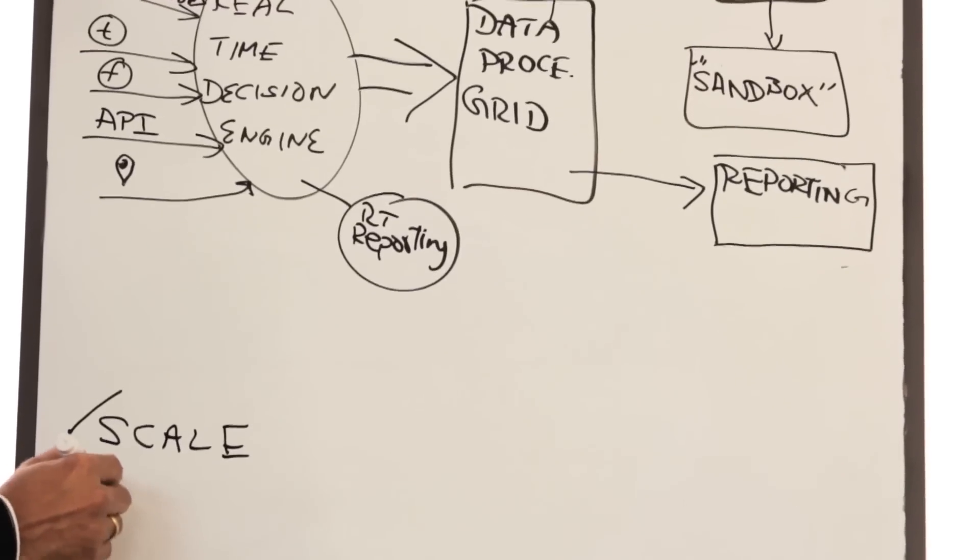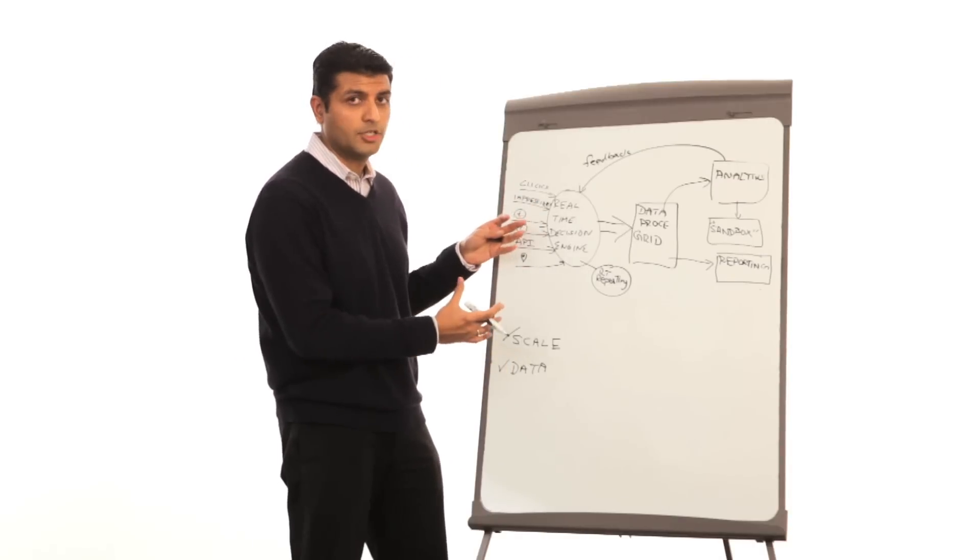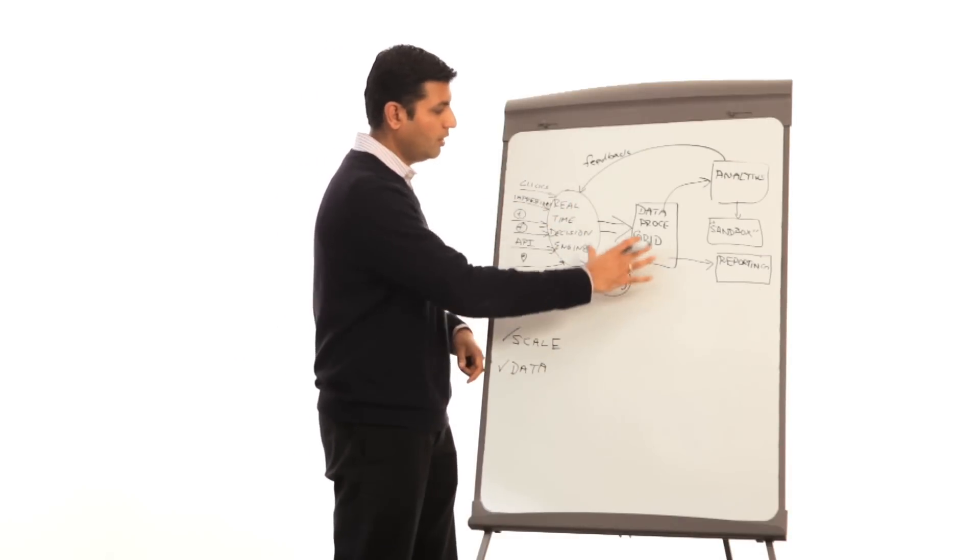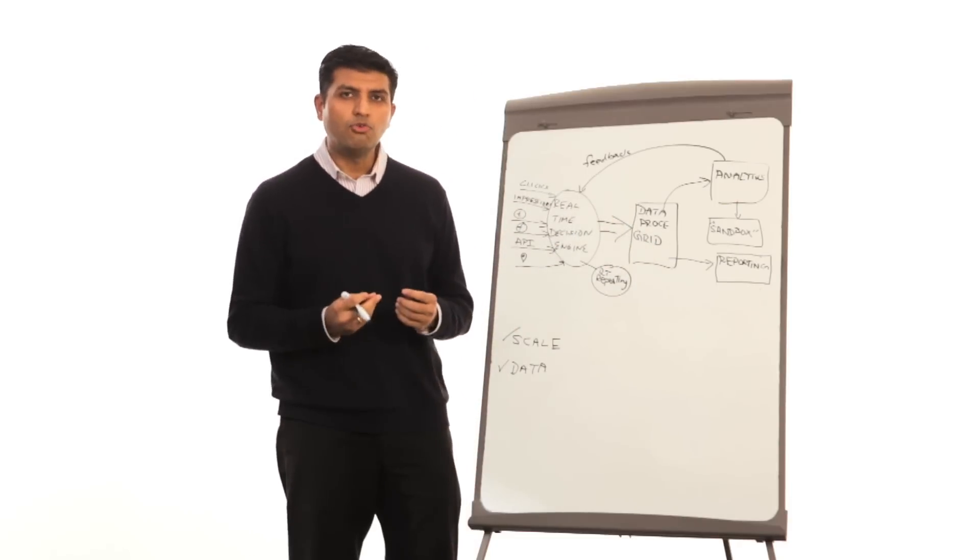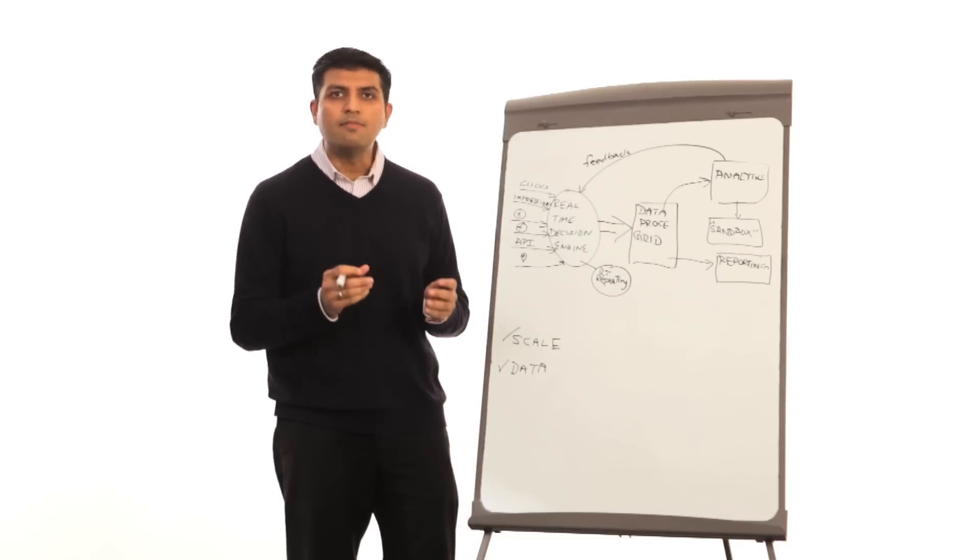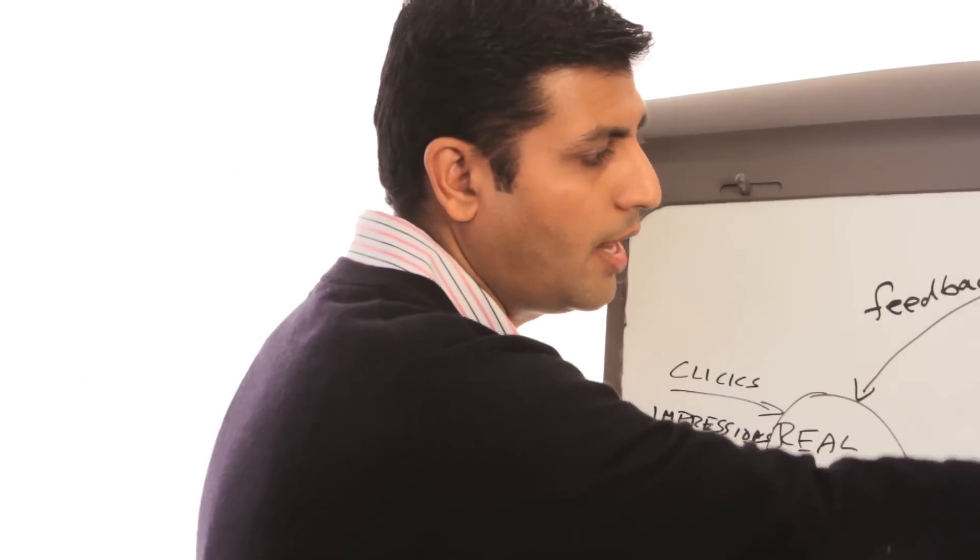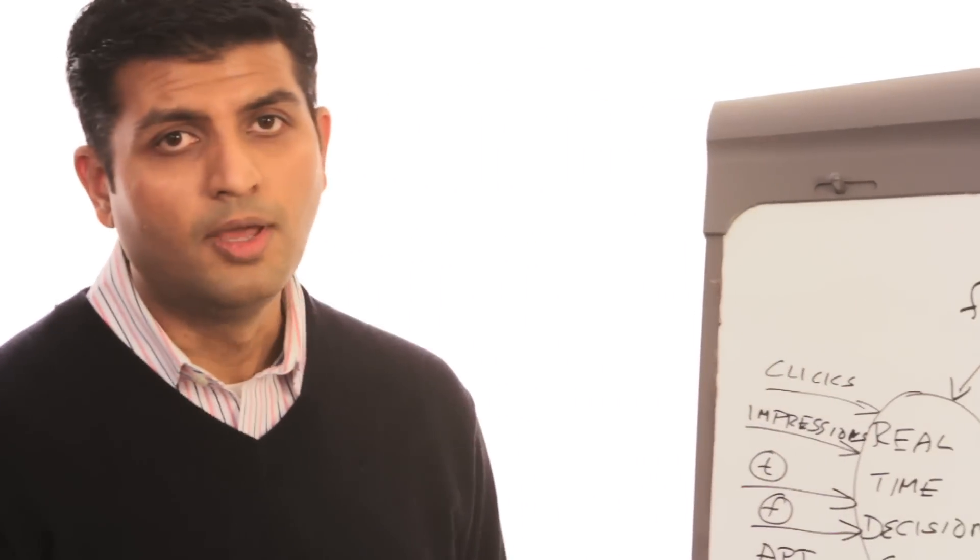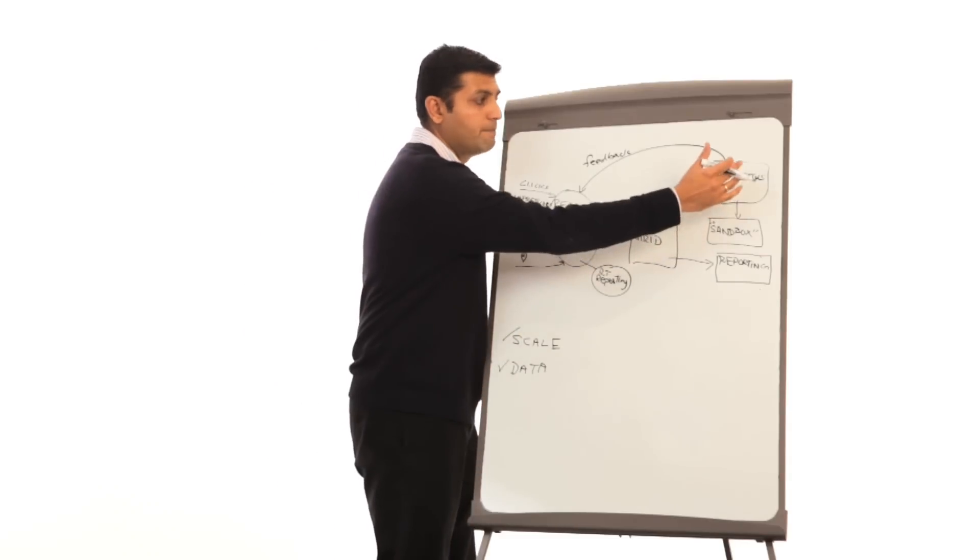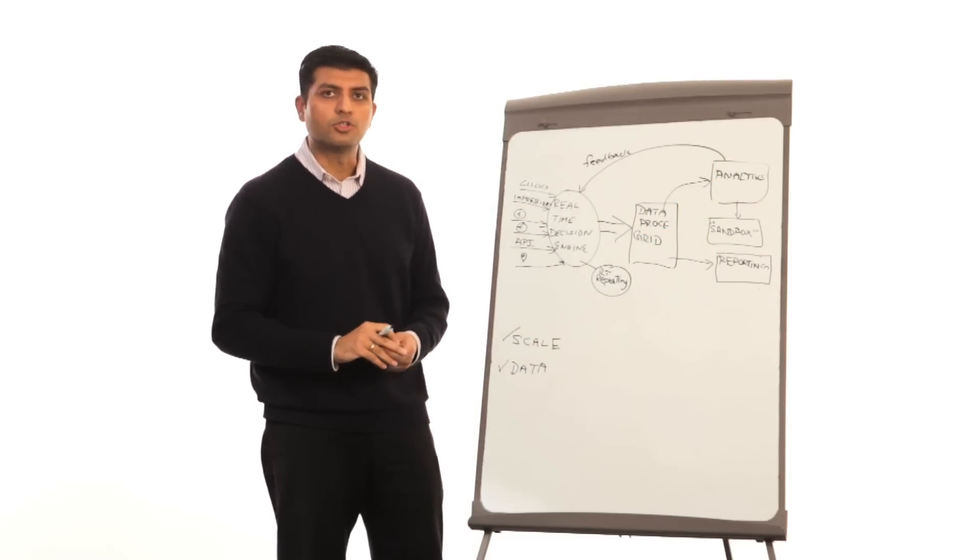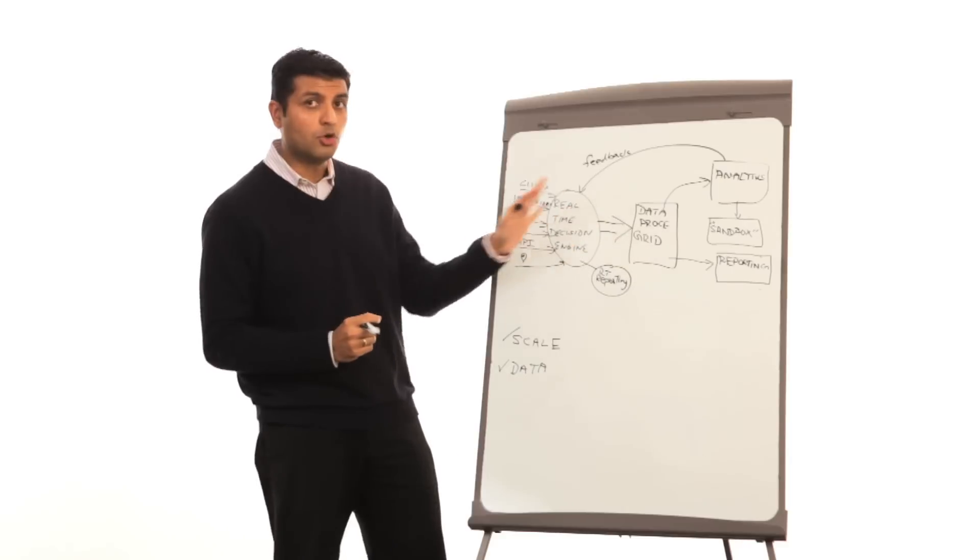The type of data also is very diverse, and that's a key consideration. For example, in this side of the architecture, the real-time decision engine and the data processing grid, the data is usually semi-structured and maybe even unstructured. We're talking about text and tweets and those type of things. As you start looking at the analytics subsystem and the reporting subsystem, the data tends to become more and more structured. Usually when people are introspecting data from an end user perspective, it tends to be a little bit more structured. So there is a variation in the complexity and variety of data as you go through this chart.